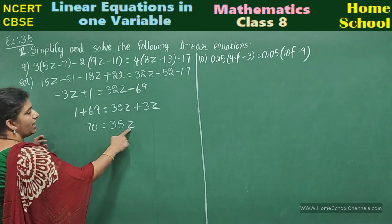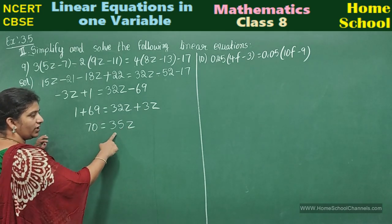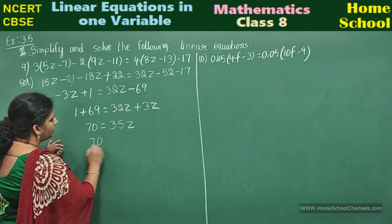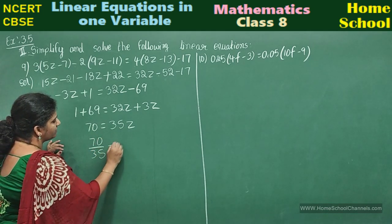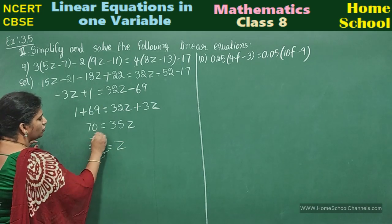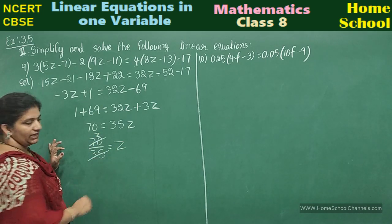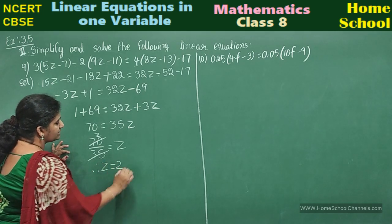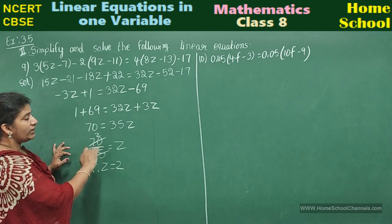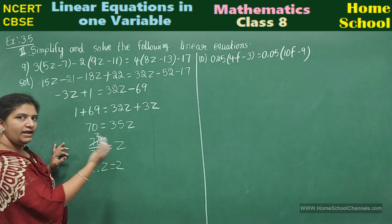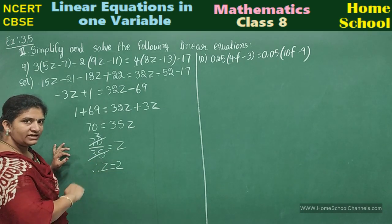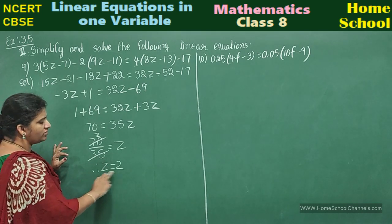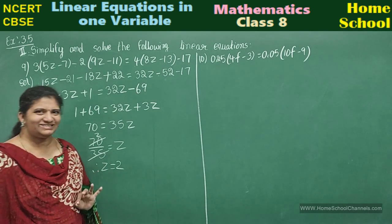Now other than z variable, what you have? 35. So transpose that 35 here. 70 divided by 35 equals z. 35 twos are 70. Therefore, you can write z equals 2. Next step, at a time interchange LHS and RHS, no sign will be changed. Therefore, z equals 2 is your answer.